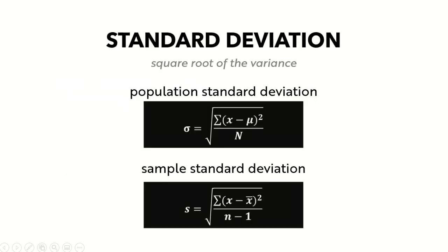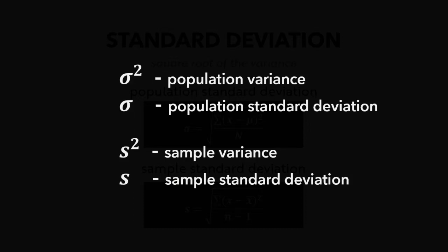As mentioned, we don't usually report data using variance. Instead, we take the square root of the variance to get the same unit of measurement as our original data — this is called the standard deviation. The square root of the population variance is the population standard deviation (σ), and the square root of the sample variance is the sample standard deviation (s, also commonly reported as SD). So σ² is population variance, σ is population standard deviation, s² is sample variance, and s is sample standard deviation.